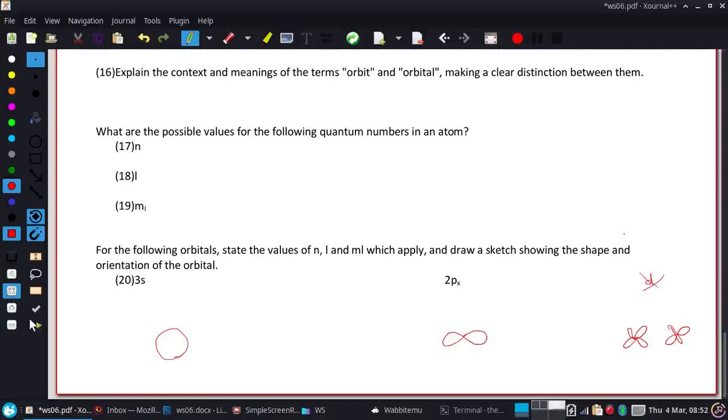Alright, but getting the actual values, the n sub l and the m sub l, those are things that we can get. Now it turns out the 3 and the s only tell you the n and the l, and same with that 2 and p, still only tells you the n and the l. The m sub l is slightly different.